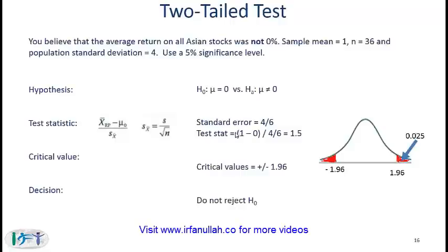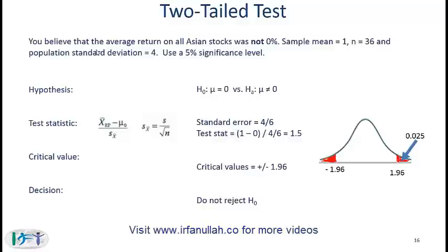One of the biggest issues people have in hypothesis testing is the distinction between one-tailed and two-tailed tests. In the reading we've done so far — Reading 10 — the whole concept is around two-tailed tests, and that's what I'll start with. I'll explain this concept with a simple example.